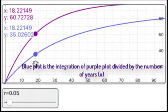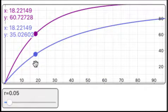The blue plot is the area under the graph up to 18.2 years divided by 18.2 years. If you look at the numbers in blue, at 18.2 years the y-axis, which is the average risk of rupture, is 35.03%.